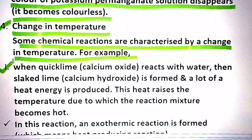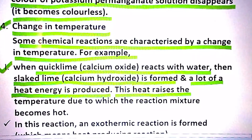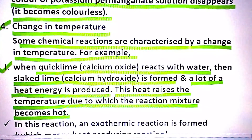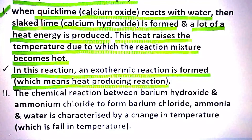Let us take an example. When quicklime, i.e., calcium oxide reacts with water, then calcium hydroxide — also known as slaked lime — is formed, and a large amount of heat energy is produced. This heat raises the temperature, causing the reaction mixture to become hot. Since a large amount of heat is produced, this is an exothermic reaction, which means a heat-producing reaction.